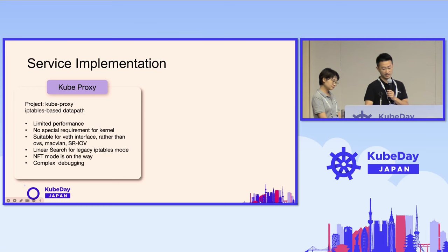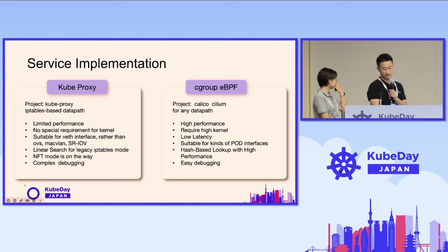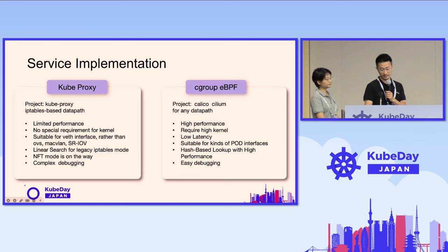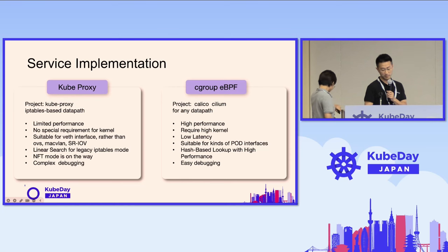The second solution for implementing services is the cgroup eBPF approach. The typical project is Cilium, where the infrastructure has gone through stages named post-routable service and socket-based load balancing. Specifically, Calico also implemented similar functionality. The main advantage of cgroup eBPF is high performance, as the translation occurs during the container's network system call. In addition, there is strong compatibility — it can work with any CNI as long as the kernel version meets the eBPF requirements.